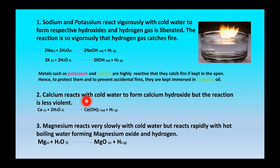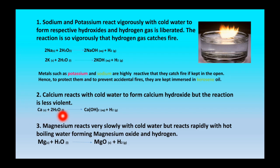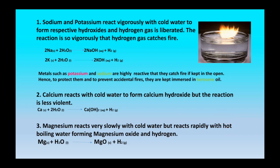Calcium reacts with cold water but this reaction is not as violent. It is also exothermic but does not catch fire. Calcium reacts with water to produce calcium hydroxide. Magnesium does not react with cold water but reacts with hot boiling water to form its corresponding hydroxide.